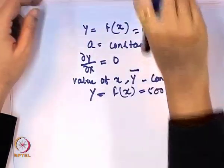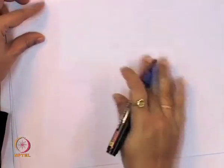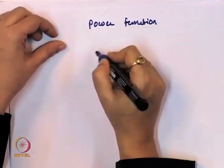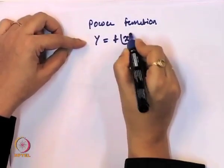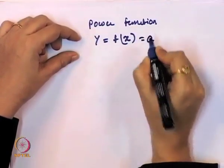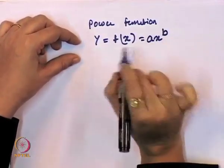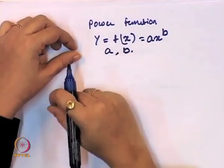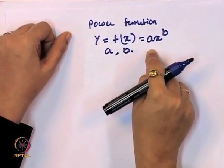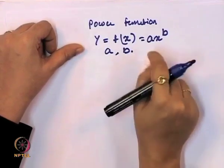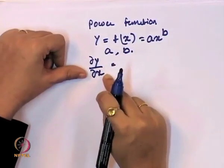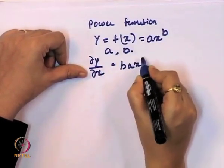Now we discuss the second kind: the derivative of a power function. Here the functional form has a power on it. Suppose y is a function of x, which may be y = ax^b, where a and b are both constants. If you take the derivative of this, del y / del x = b·a·x^(b−1).